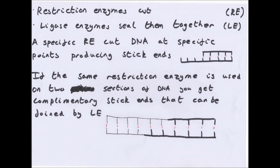A sticky end is formed when DNA is cut - it's a short run of unpaired exposed bases seen at the end of the cut section. Complementary sticky ends can stick together. This is why it's important: if you use the same restriction enzyme on two different bits of DNA, you will have the same bases exposed, which means those sections are complementary, so they can be joined together using ligase enzymes.